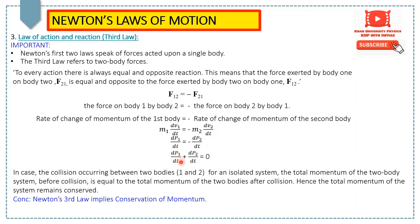Keeping both terms on the left side, we have dp₁/dt + dp₂/dt = 0. Taking the example of a collision between two bodies in an isolated system, the total momentum of the two-body isolated system before collision equals the total momentum after collision. The total momentum of the system remains conserved. Hence, the conclusion is that Newton's third law implies conservation of momentum as well.